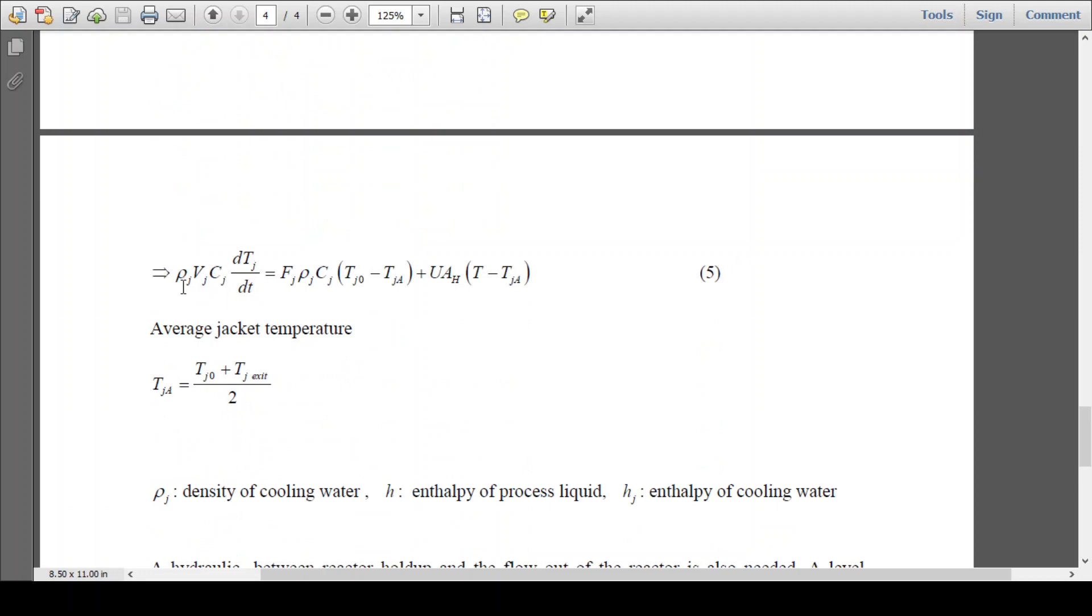So we are getting ρj·Vj·Cj·dTj/dt = Fj·ρj·Cj(Tj0 - Tja) + UAh(T - Tj), where average jacket temperature was considered here - the inlet temperature to the jacket plus exit temperature of the jacket divided by 2.